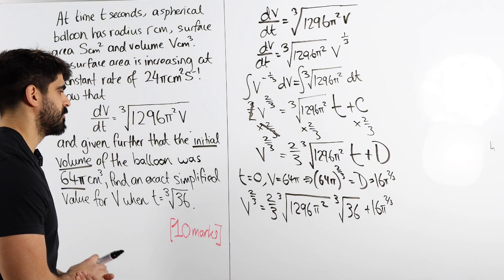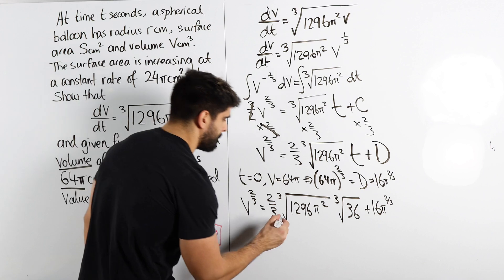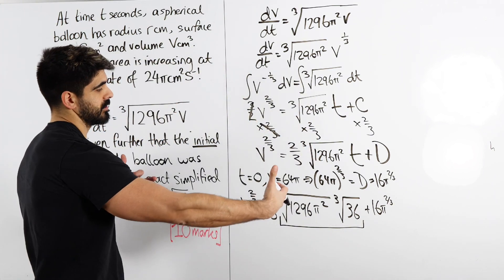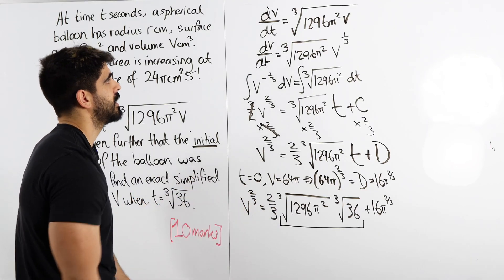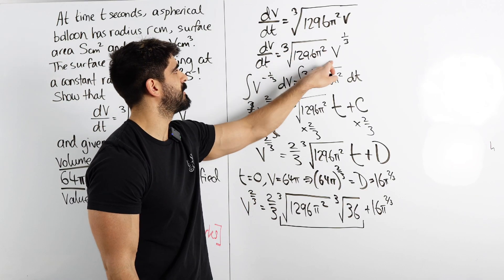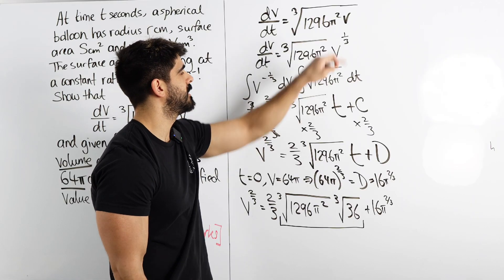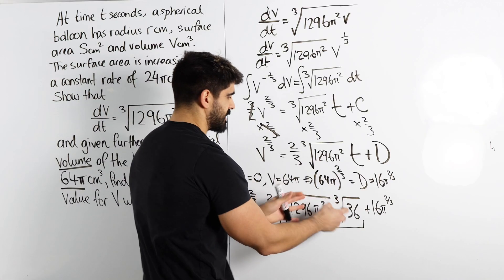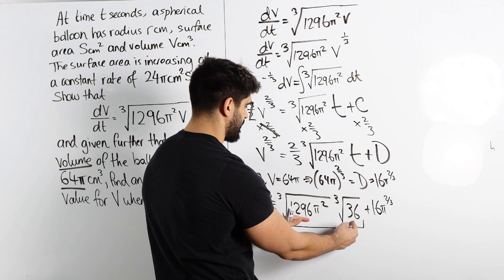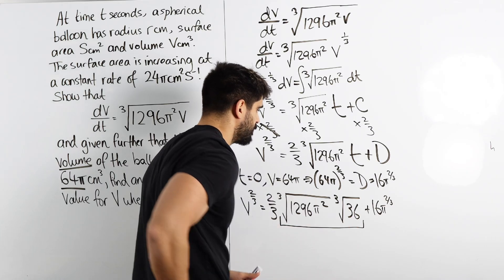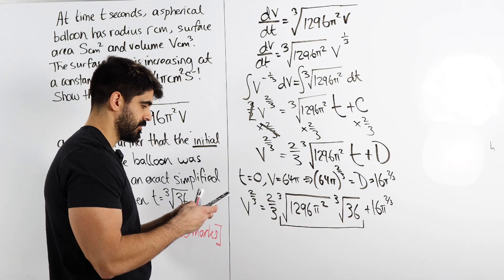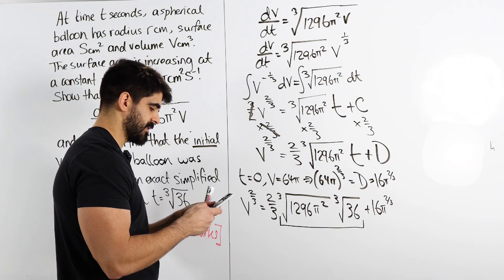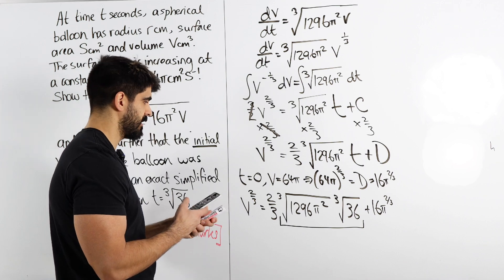So we're left with v to the power of 2 thirds is 2 thirds cube root of 1296π squared times the cube root of 36, that's our t value, plus 16π to the 2 thirds. How are we simplifying all this? Well, I notice that both of these are a cube root, meaning you can bring them together as part of one cube root. Just like here, when I split them, they're both cube roots. I'm doing the opposite and bringing it all into one. Which makes me wonder if when I bring this in and multiply these together, if I do 1296 times 36, can I cube root that? Does that become a nice number? 1296 times 36. 46656. And if I cube root that answer, nice! I get 36. And I have a 2 thirds there.